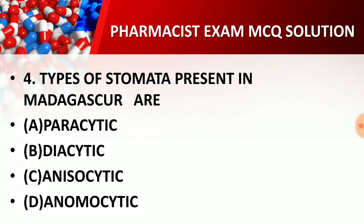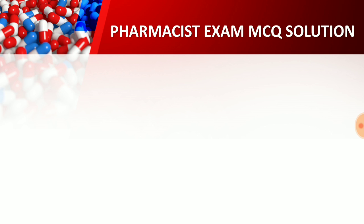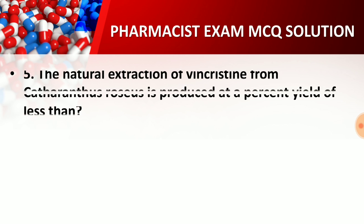The right answer for question four is option C: anisocytic stomata. Madagascar periwinkle refers to Catharanthus roseus, the natural source of vincristine.